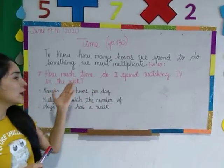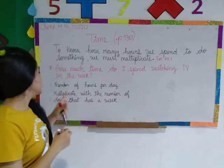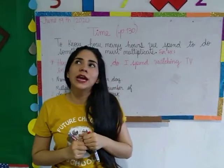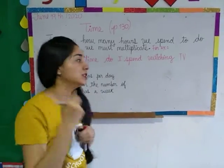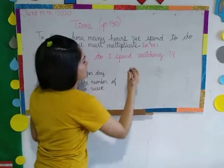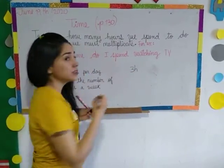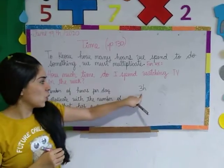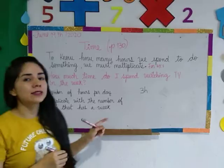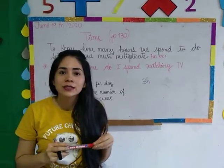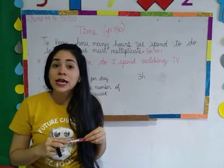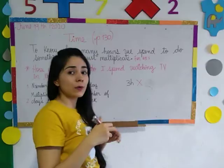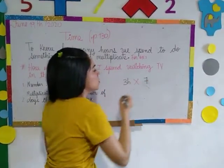The first step is to know the number of hours per day. For example, I spend three hours every day watching that series. Three hours per day. The second step is to multiply this number by the number of days in a week. How many days does a week have? Seven days. So I have to multiply three hours by seven, because that's the quantity of days.